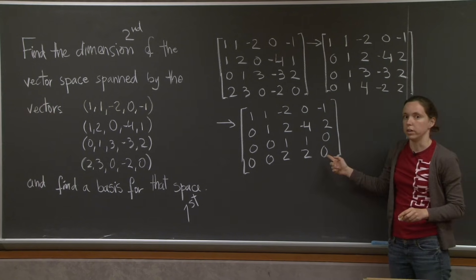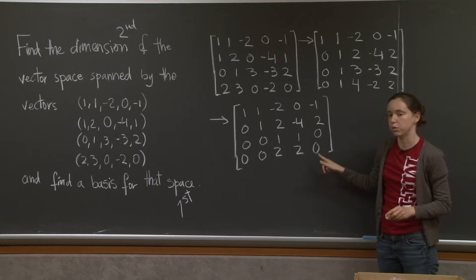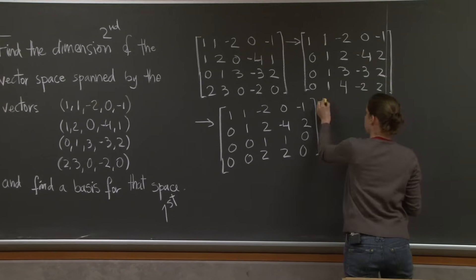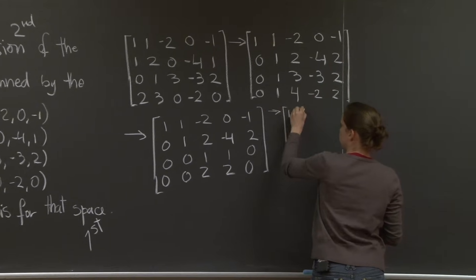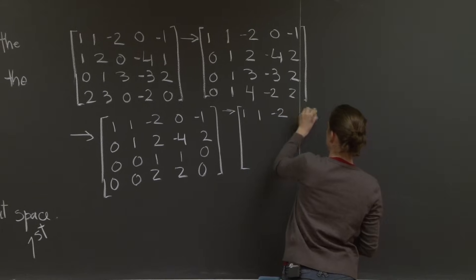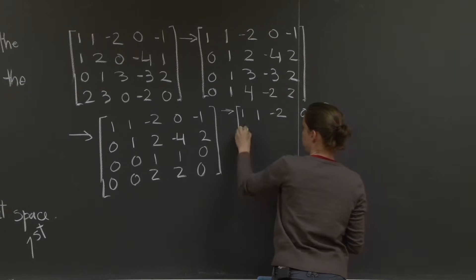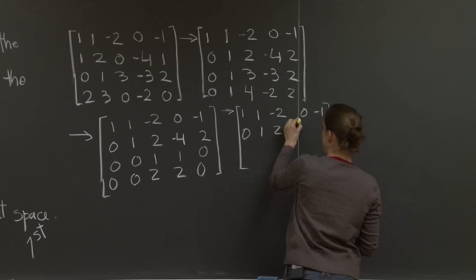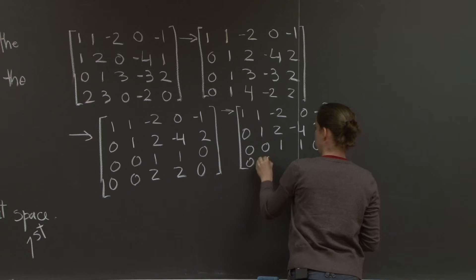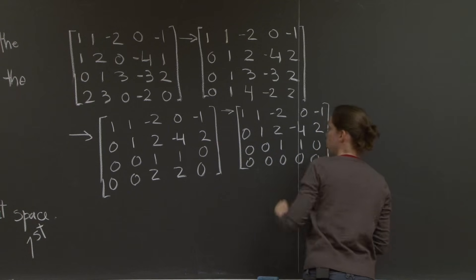Oh, you can see where this is going. In the next step, this row is going to disappear. 1, 1, minus 2, 0, minus 1. 0, 1, 2, minus 4, 2, 0, 0. 1, 1, 0, 0, 0, 0, 0, 0.